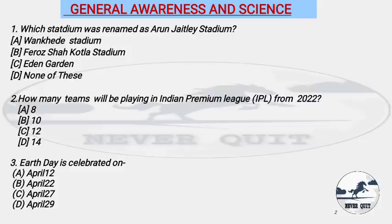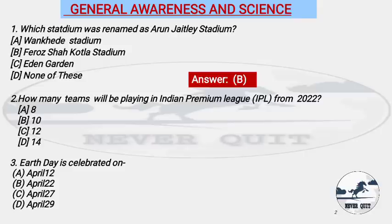Question 1: Which stadium was renamed as Arun Jaitley Stadium? Options: A) Bankeri Stadium, B) Firoz Shah Kotla Stadium, C) Eden Garden, D) None of these. The right answer is option B, Firoz Shah Kotla Stadium. This stadium is located in New Delhi. Keep this question in mind as it can be asked in any kind of exam.